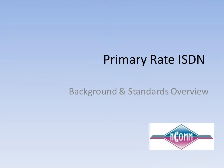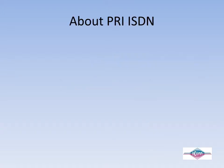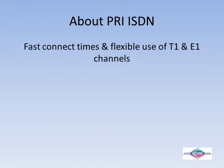Welcome to ENCOM's Primary Rate ISDN Background and Standards Overview. As one of the two main telephony signaling methods used in the WAN world, Primary Rate ISDN permits fast connect times and flexible use of the bearer channels contained in T1 and E1 lines.